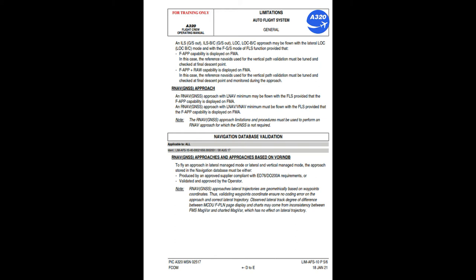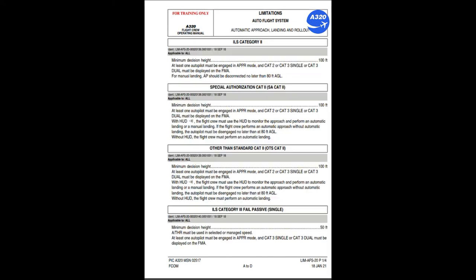ILS category 2: minimum decision height 100 feet. At least one autopilot must be engaged in approach mode and CAT 2 or CAT 3 single or CAT 3 dual must be displayed on the FMA. For manual landing, AP should be disconnected no later than 80 feet AGL. Special authorization CAT 2 (SA CAT 2): minimum decision height 100 feet; at least one autopilot must be engaged in approach mode and CAT 2 or CAT 3 single or CAT 3 dual must be displayed on the FMA.